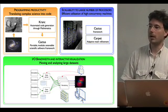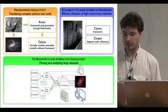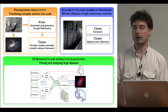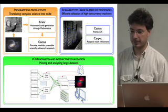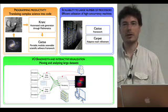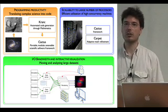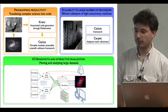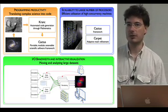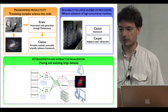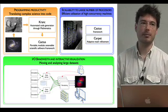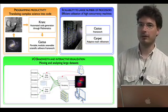The first cornerstone is programming productivity. In order to model complex equations such as the Einstein equations, one needs to code the equations so that a computer can solve them, which is often a complex step. We use the CACTUS framework to couple different physics modules, and once the code has been created, it is necessary to execute it in a scalable manner on large systems. In this demonstration we are using the Ranger supercomputer in Austin, Texas, running on 2,000 cores using the CACTUS framework and the Carpet adaptive mesh refinement infrastructure.